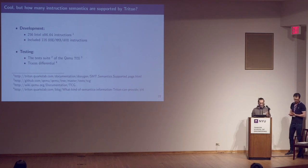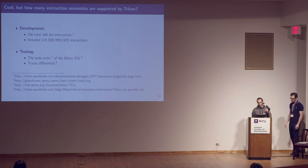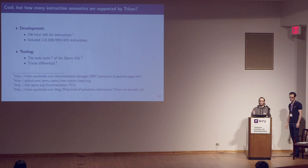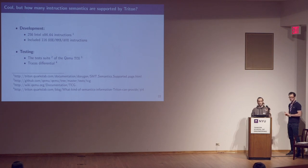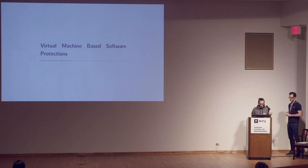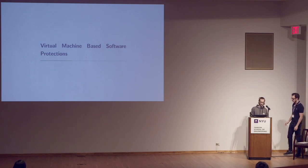We test our semantics using the QEMU test suite and tracer differentials. Tracer differential testing basically means we run a program and at each program point we check if there is a difference between the symbolic state and the concrete state. If there is a difference, it means our semantics contain an issue. Now Romain will talk about concepts of virtual machine-based software protections.